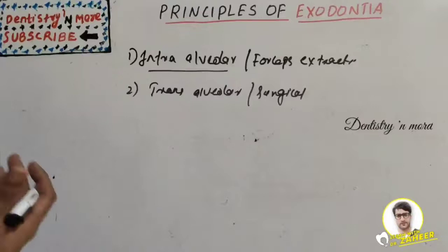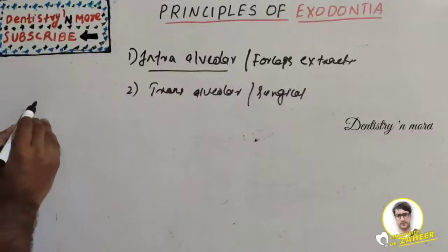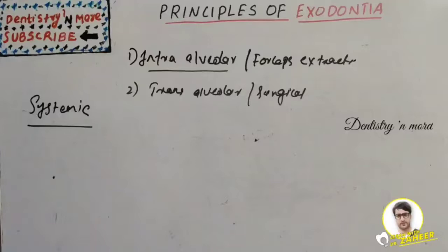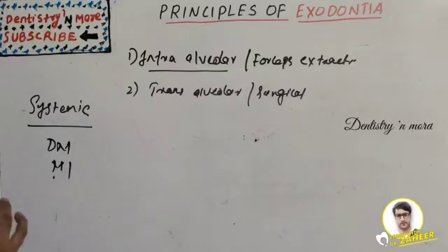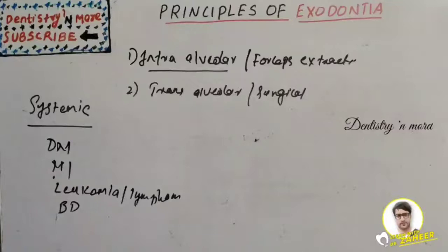Sometimes tooth extraction is contraindicated — it can be due to systemic or local causes. Systemic causes include severe uncontrolled diabetes mellitus, severe myocardial infarction, uncontrolled leukemia and lymphoma, bleeding disorders, and pregnancy — most commonly the first and third trimester. The procedure can be done safely during the second trimester.